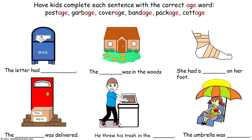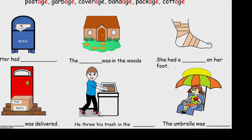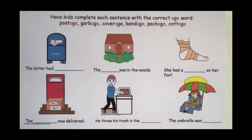This is a template for kids to complete each sentence. Have kids complete each sentence with the correct A-G-E word. The words are: postage, garbage, coverage, bandage, package, and cottage. Now have kids complete each sentence — it still makes the soft G sound, but it does not say -age; it says -idge.